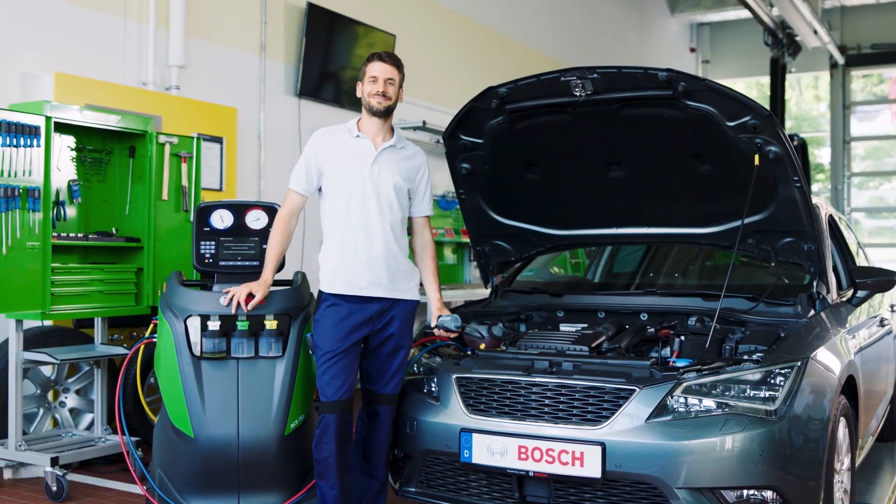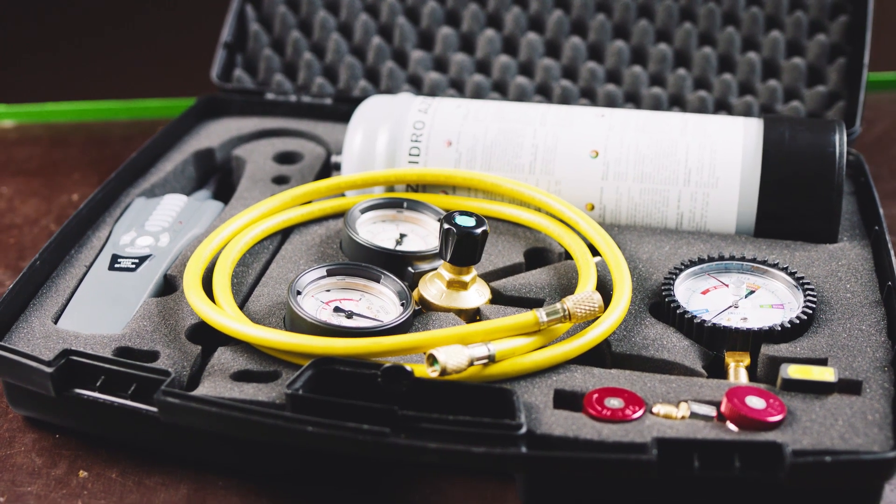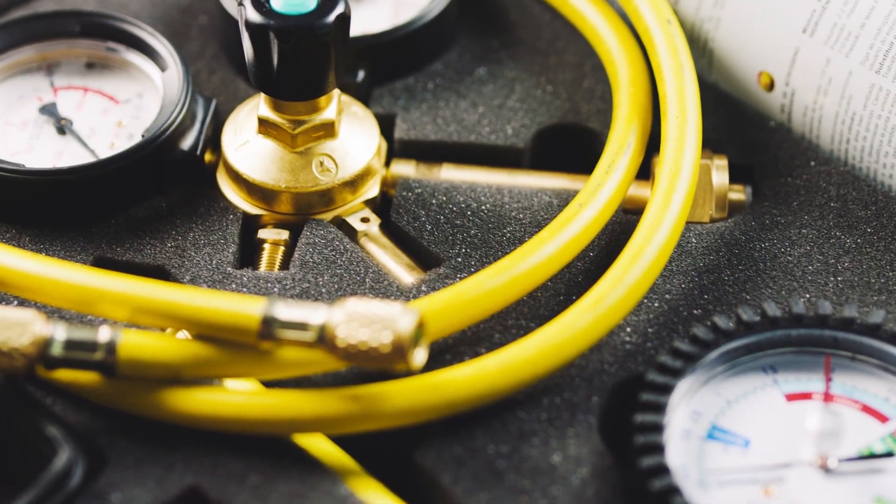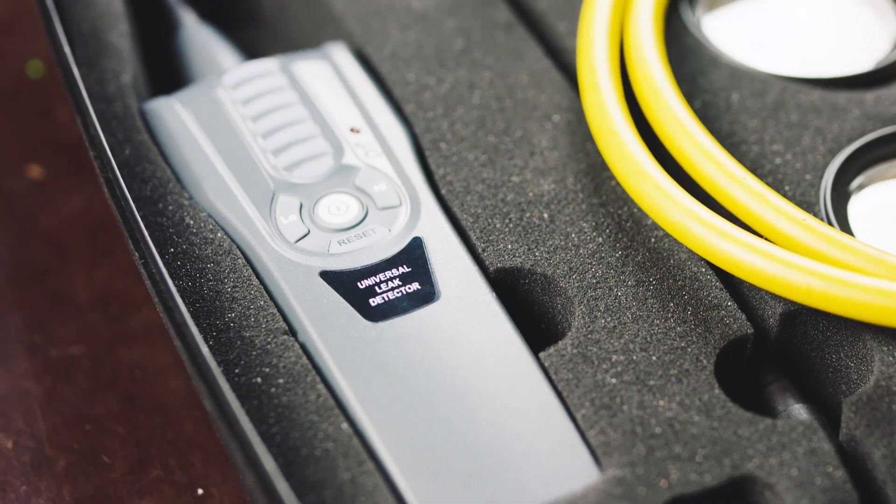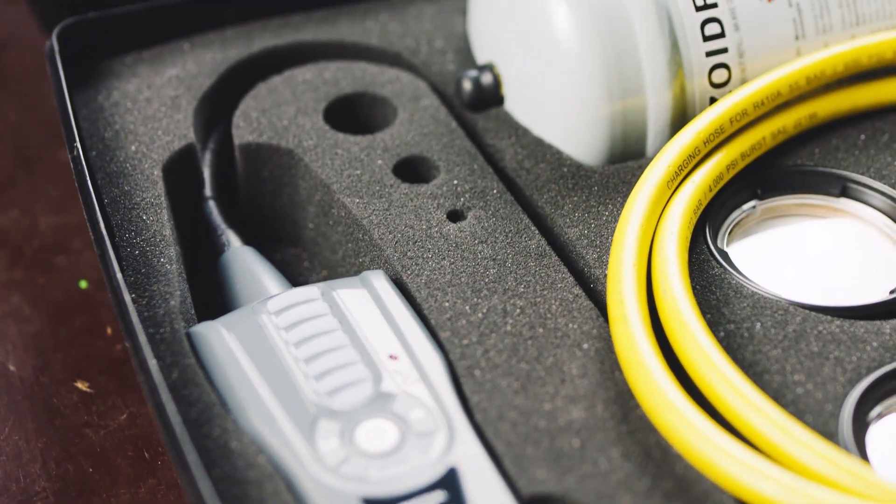Detect even the smallest leakages using the N2H2 kit add-on from Bosch. Additionally, Bosch provides several portable kits, adapters, connectors, and accessories to support you in troubleshooting and AC system leak detection.